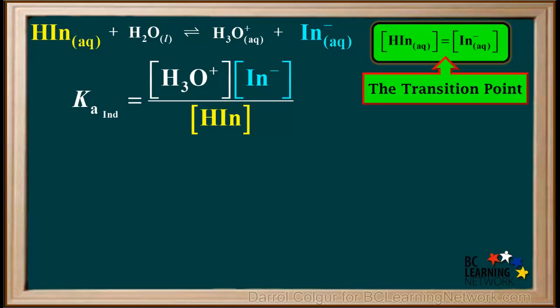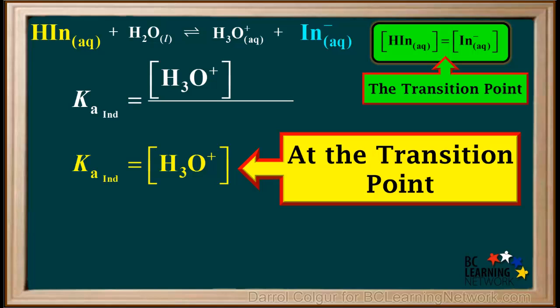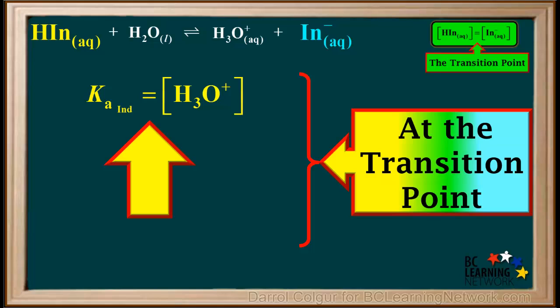Now we'll focus on the transition point. Remember, at the transition point, the concentration of HIn is equal to the concentration of In⁻. So at the transition point, because the concentration of In⁻ and HIn are equal, they can be cancelled out of the expression. So at the transition point, we can say that the Ka of the indicator is just equal to the hydronium ion concentration. Remember, this is true only at the transition point. So we know that at the transition point of an indicator, the hydronium ion concentration is equal to the Ka of the indicator.